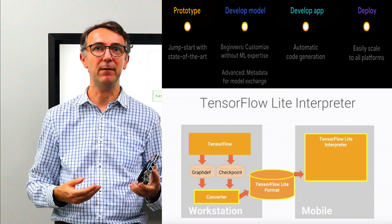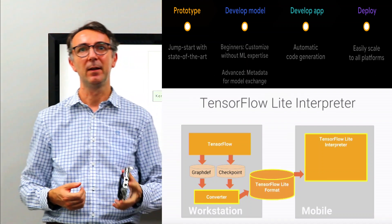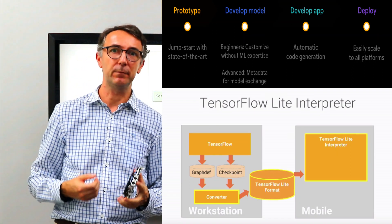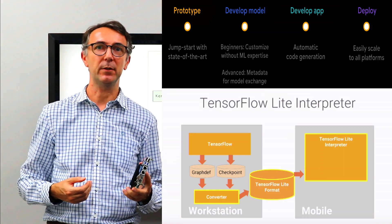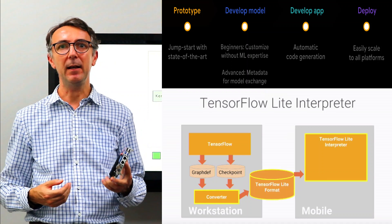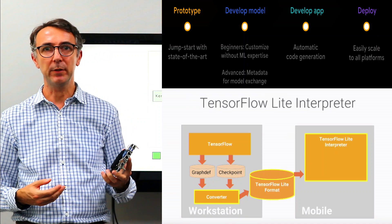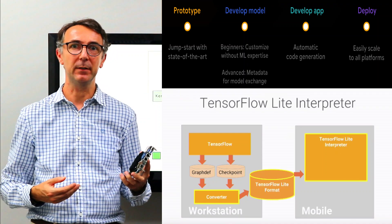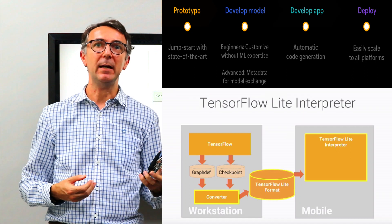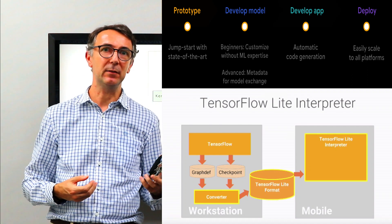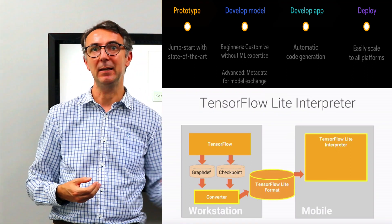This feature makes TF Lite models the right fit to work on mobile and embedded devices. Behind me you can see the process flow of the TensorFlow Lite conversion process. During the conversion process, the size of the file is reduced. TensorFlow Lite Converter converts a TensorFlow model to a TensorFlow Lite FlatBuffer file, which has the .tflite extension. TensorFlow Lite is then deployed to the client, which in our case can be a mobile device running iOS or Android, or an embedded device.